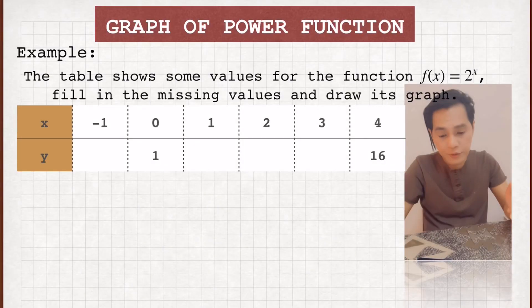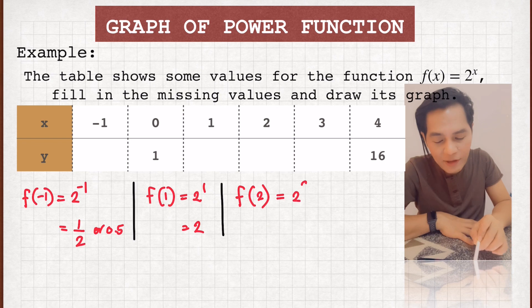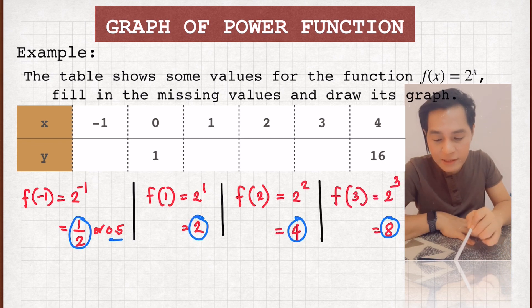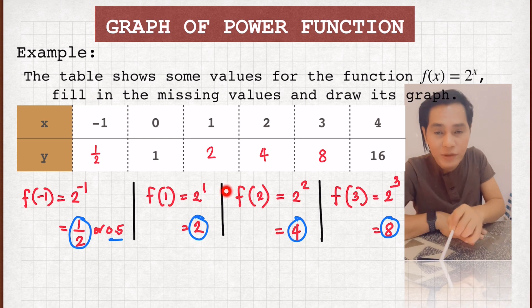To start with, to find out the missing values, just simply substitute the values of x. We have here -1 which is y = 1/2, and then for 1 which is 2, for 2 which is 4, and for 3 which is 8. So that's how you do that. Just substitute to solve for the missing values.